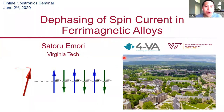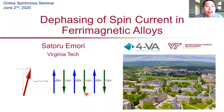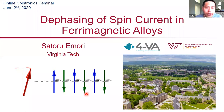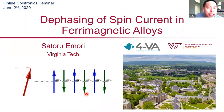Dr. Satoru Emery is an assistant professor in the department of physics at Virginia Tech. He received his BS degree in materials science and engineering at the University of California, Irvine in 2008 and PhD in materials science and engineering at MIT in 2013. His doctoral thesis work investigated the motion of chiral domain walls in ultra-thin metallic ferromagnets. Following his postdoc work at Northeastern University and Stanford University, where he studied magnetization dynamics in complex oxide materials, he joined the faculty of Virginia Tech in fall 2017. His current research program focuses on spin transport and dynamics in model thin film materials, ranging from amorphous metals to epitaxial oxides.